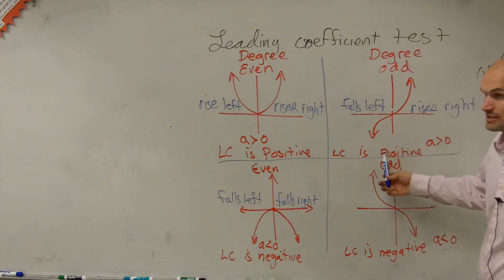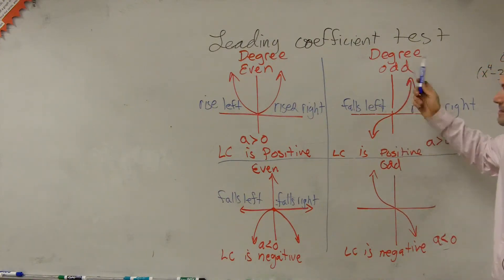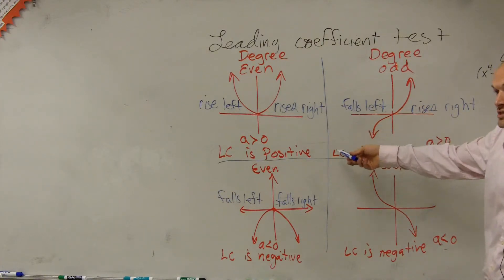Well, it's 3, which would be positive. x to the 5th is odd. That means the graph, it's not going to look exactly like this, but it's going to fall to the left and rise to the right. Okay? So the end behavior is going to be the same.